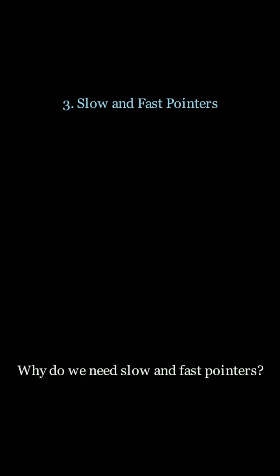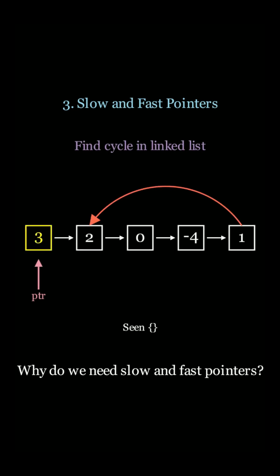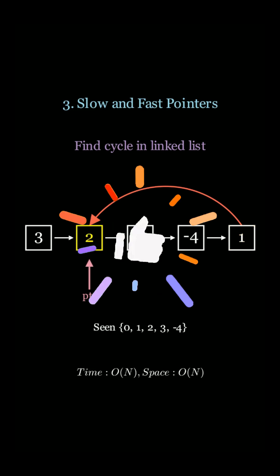Let's take a look at an example. Without slow and fast pointers, if you want to detect the cycle in a linked list, you need to use a hash set to keep track of the nodes that you already visited. This takes O of n time but also O of n space.